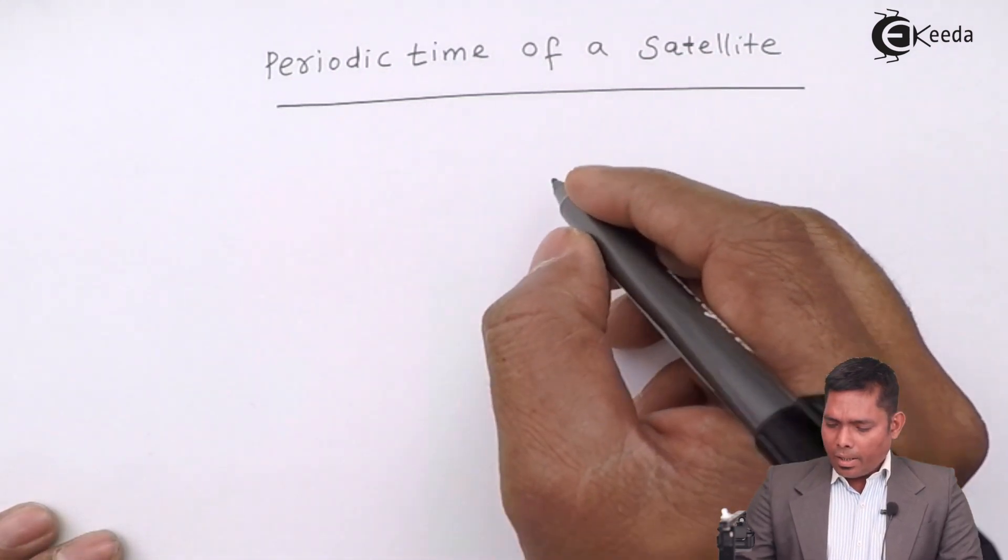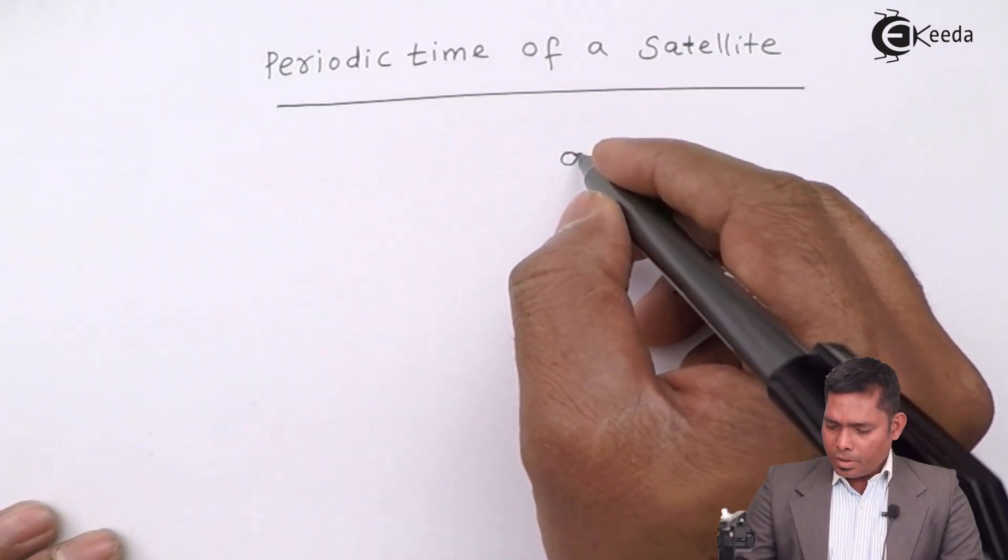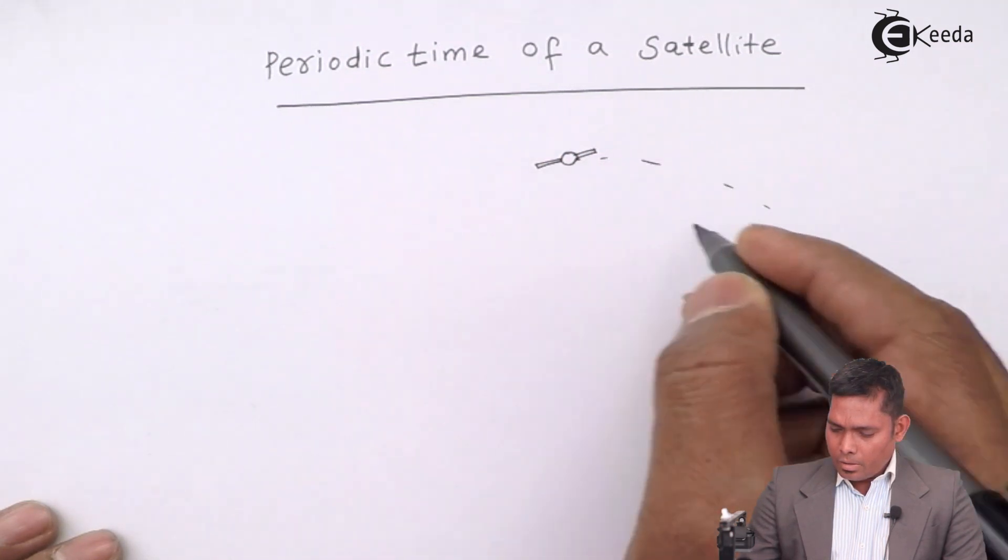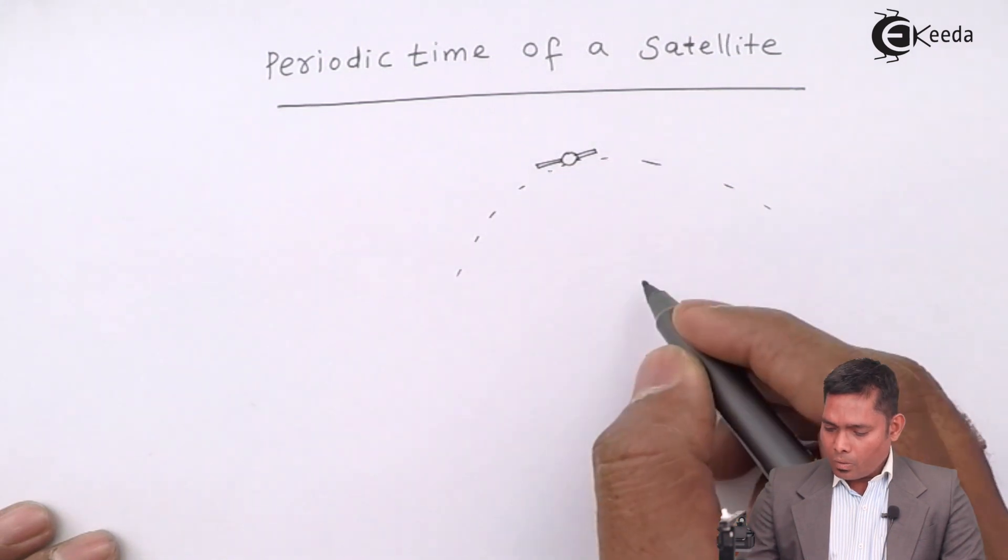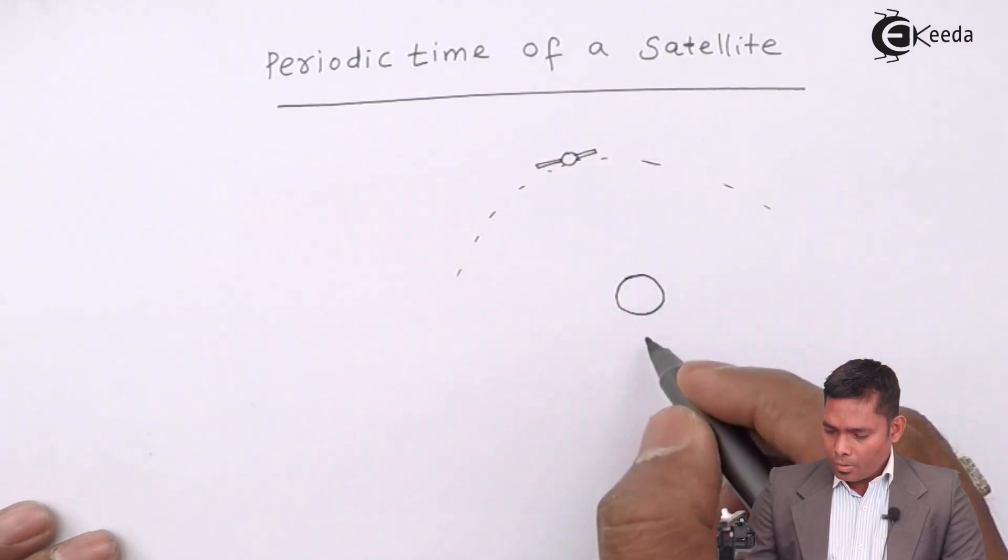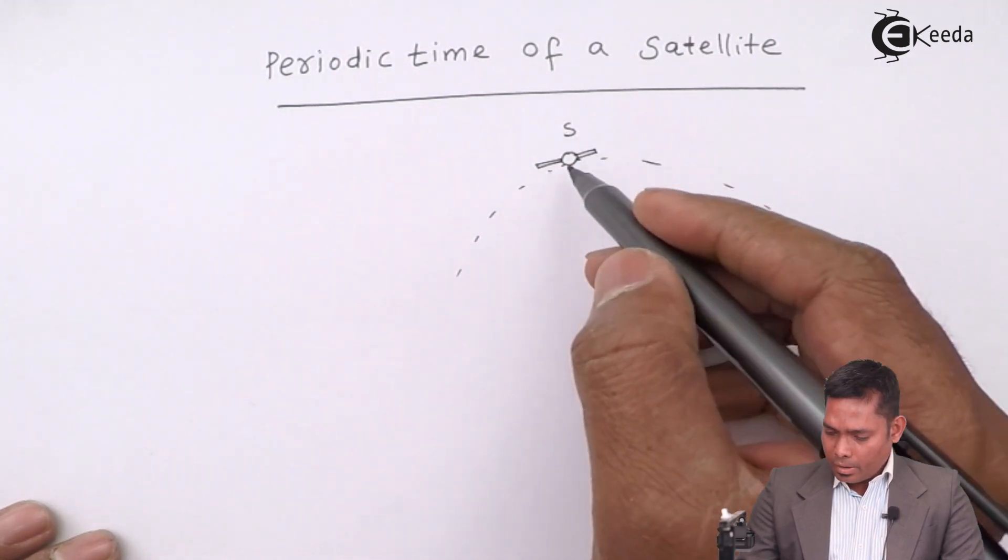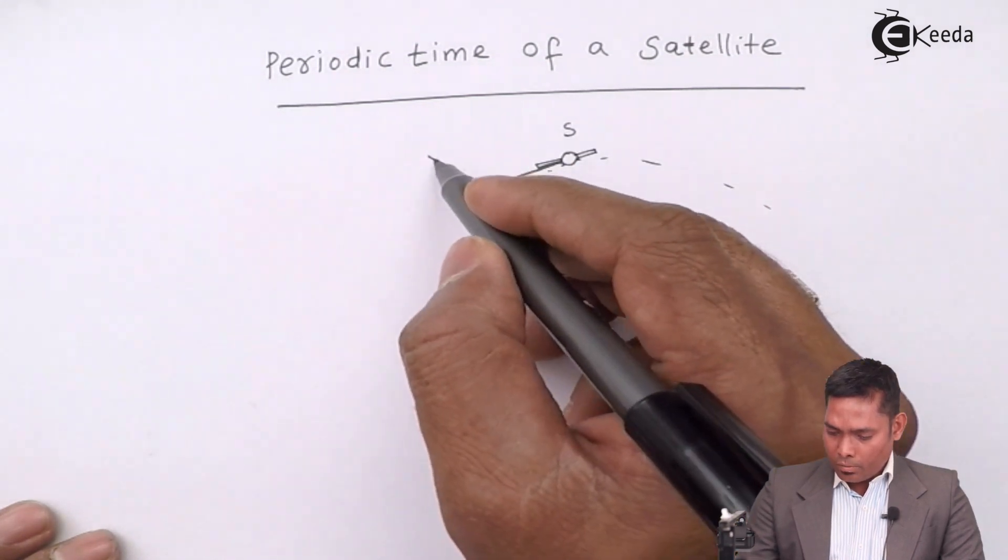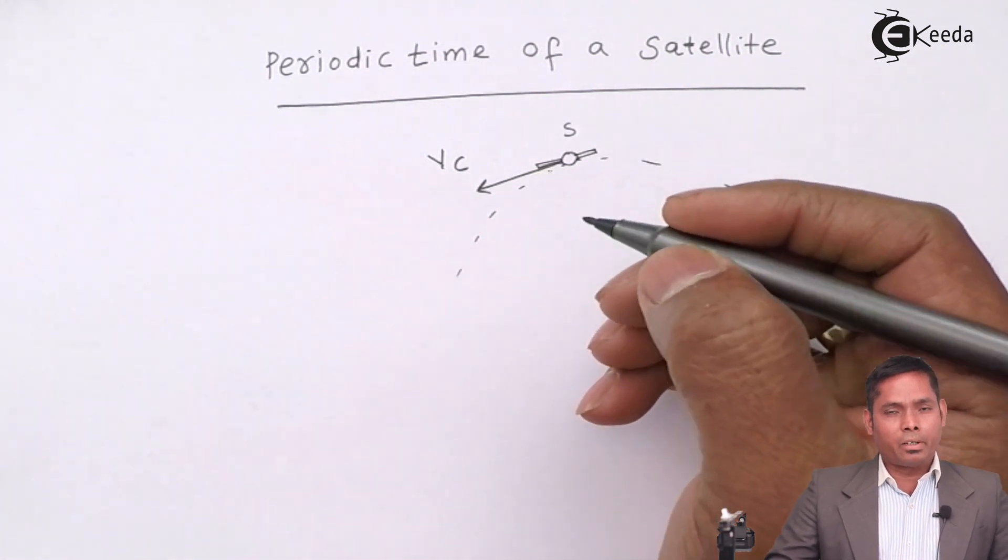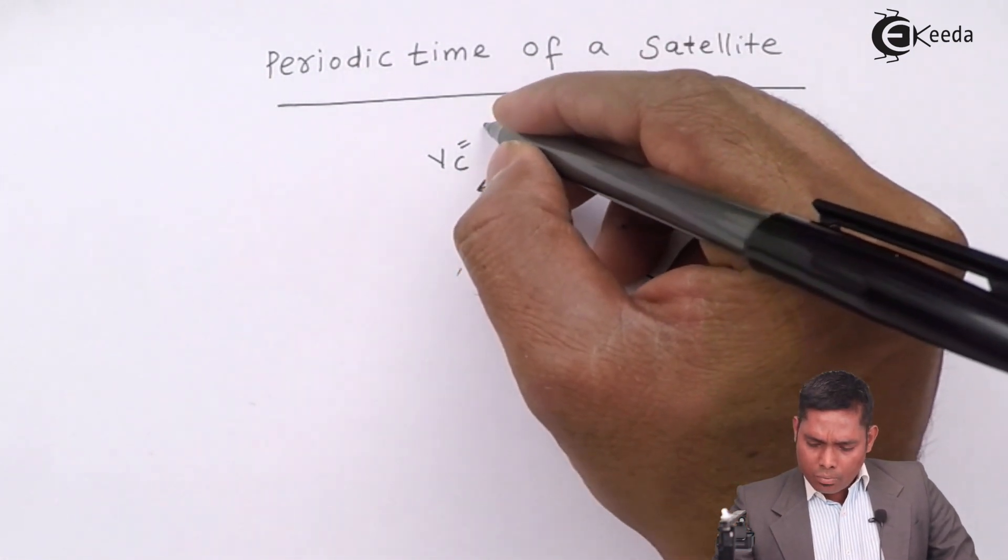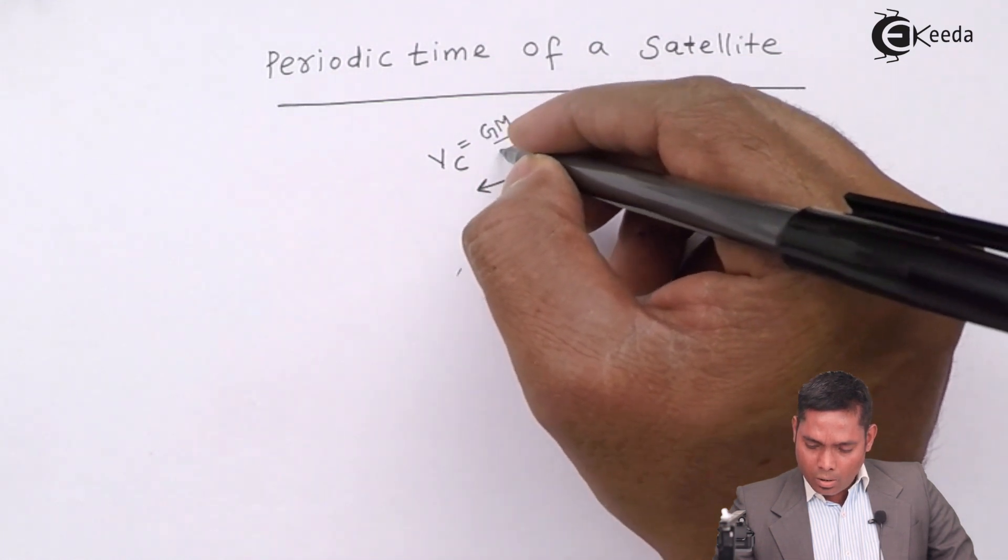Suppose that I have a satellite over here and it is revolving around Earth. This is Earth, this is a satellite and it is moving with certain critical velocity that we have determined already, that is vc equals to the root of gm over r.